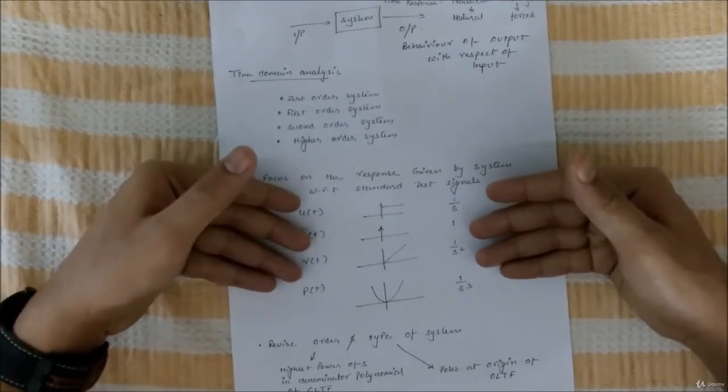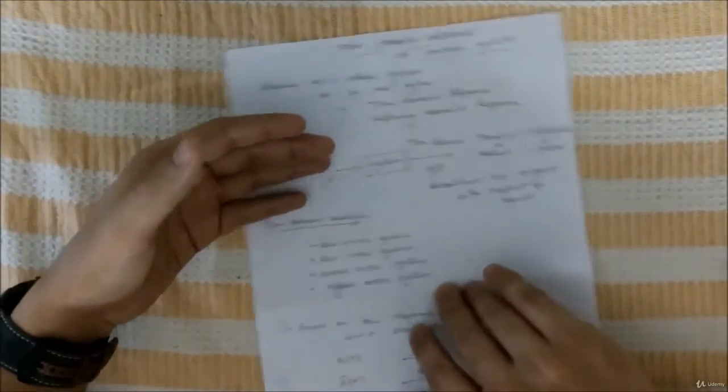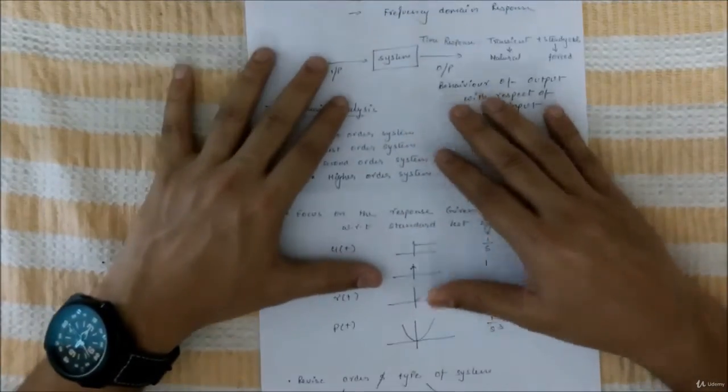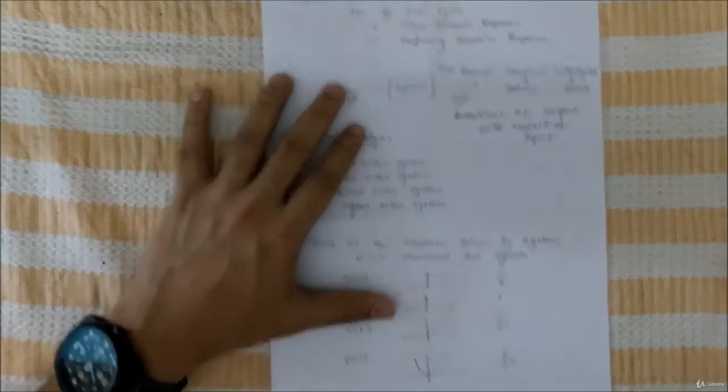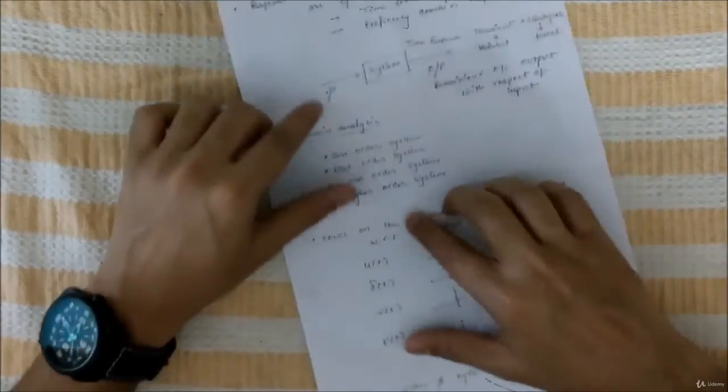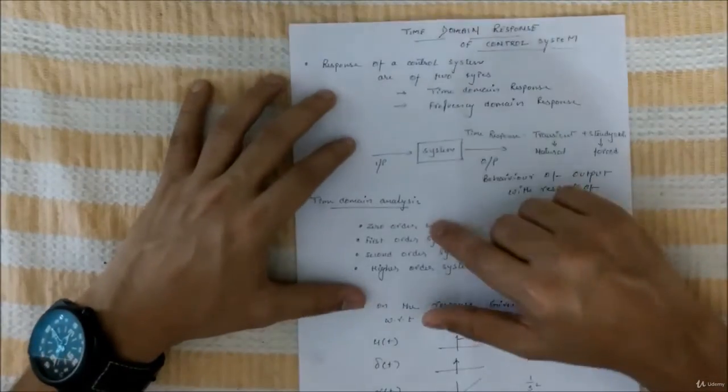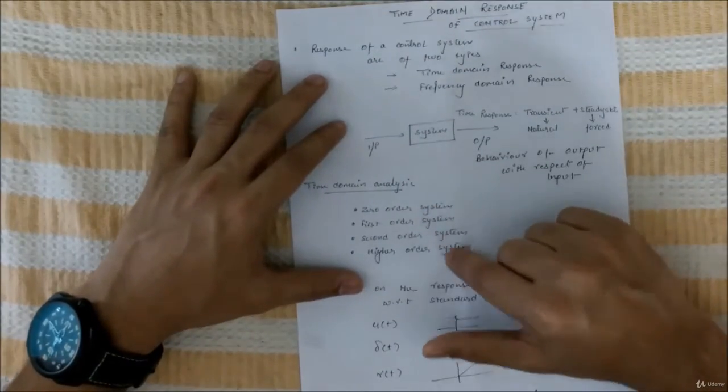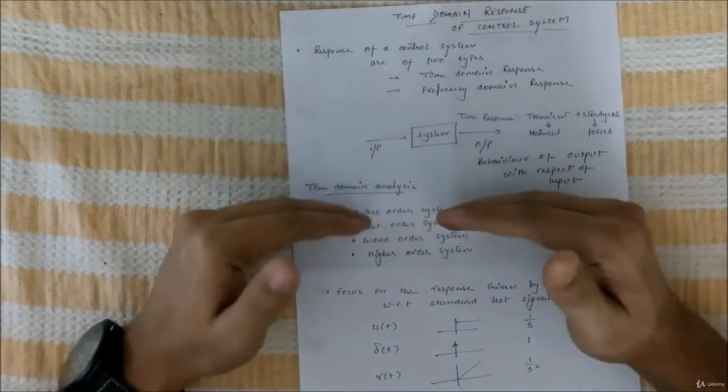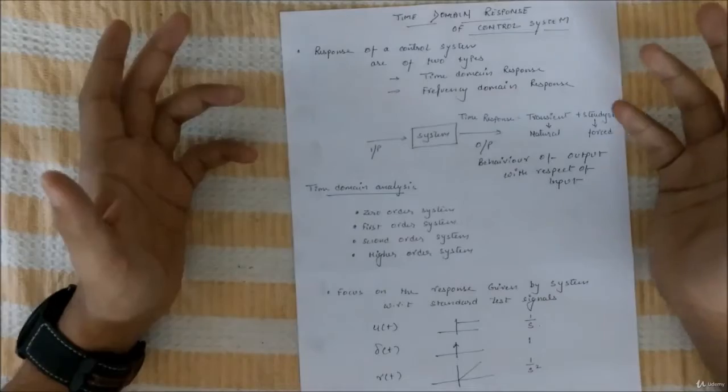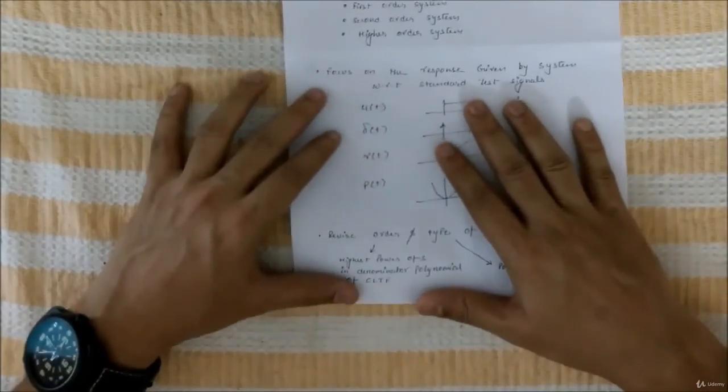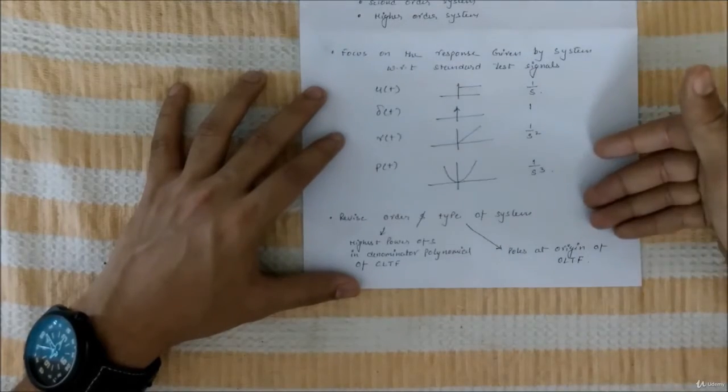This will be there as an input of a system for whole time domain analysis. You can see we are focusing on this part: input will be these four signals, system will be zeroth order, first or second order, or higher order. That's how we'll proceed order by order and we'll see what are the responses of the system.